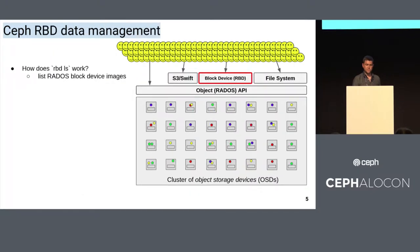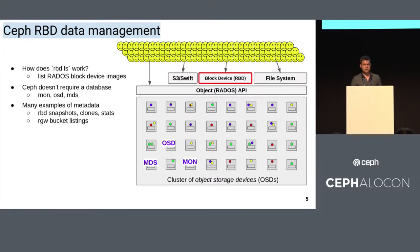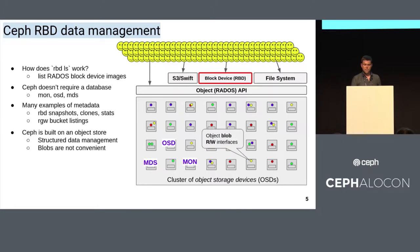Before we get started with that, I just want to spend one second talking about RBD. Have you ever wondered about how RBD LS works? For those of you who don't know, RBD is the block device feature in Ceph. RBD LS will list out the set of images that Ceph is managing for you. It's worth asking where this data is stored — because when you install Ceph, nobody's ever discussing the installation of a database.